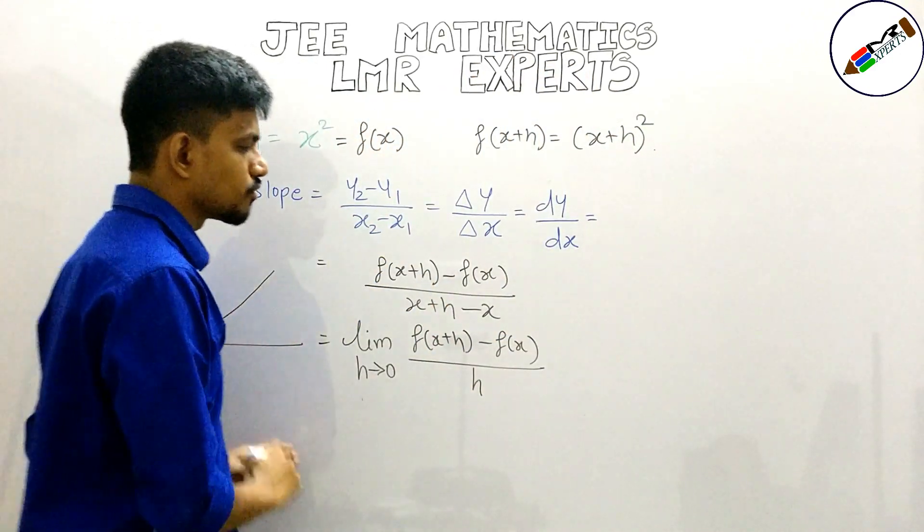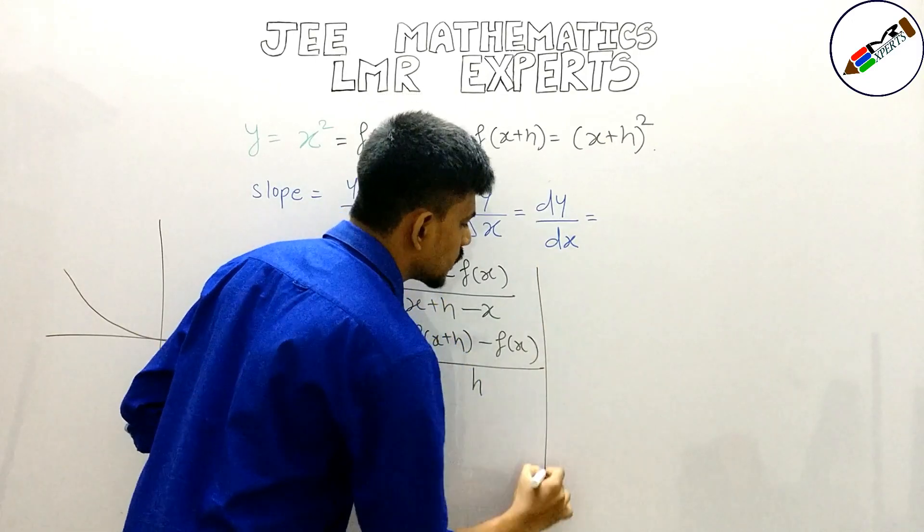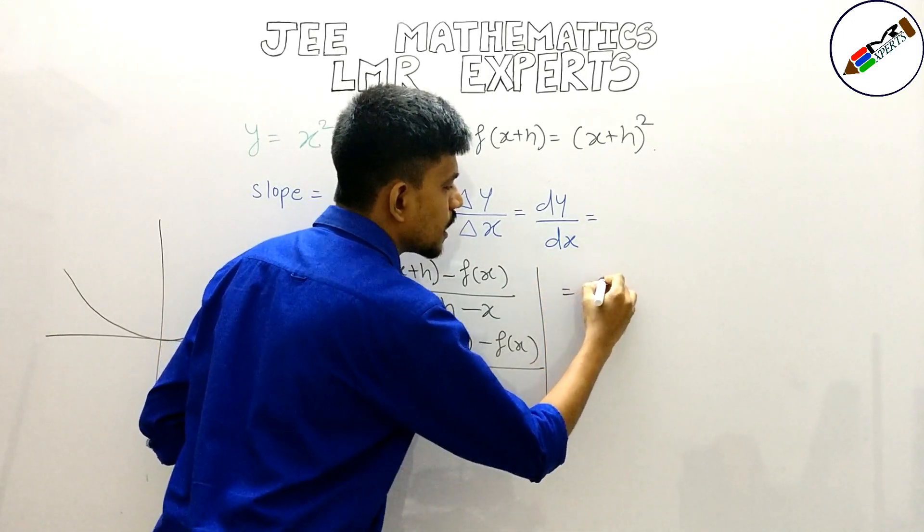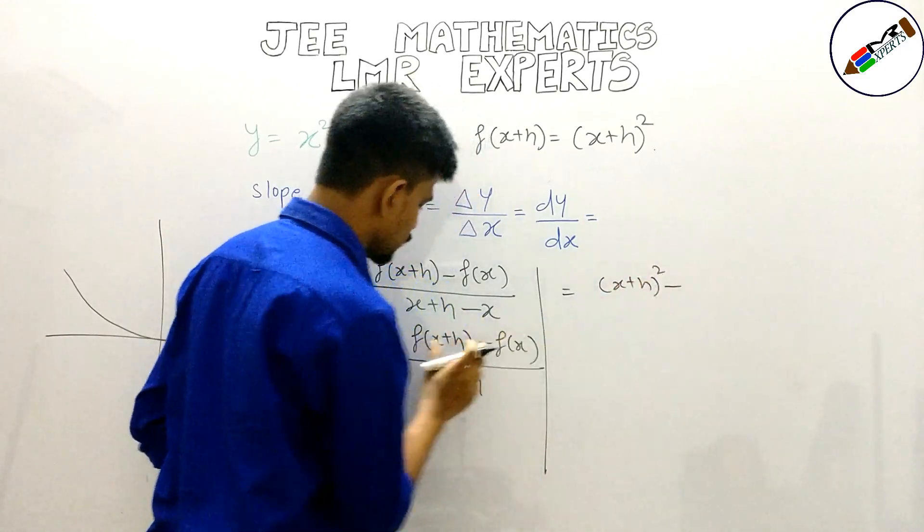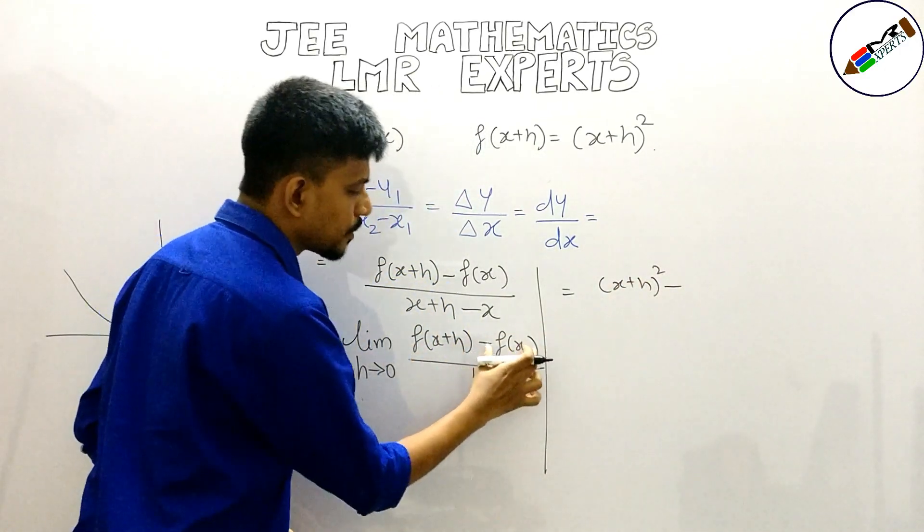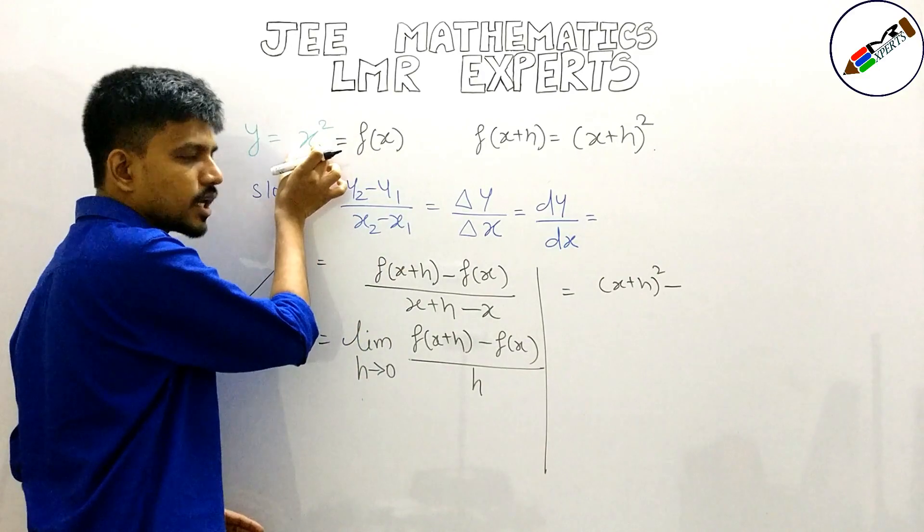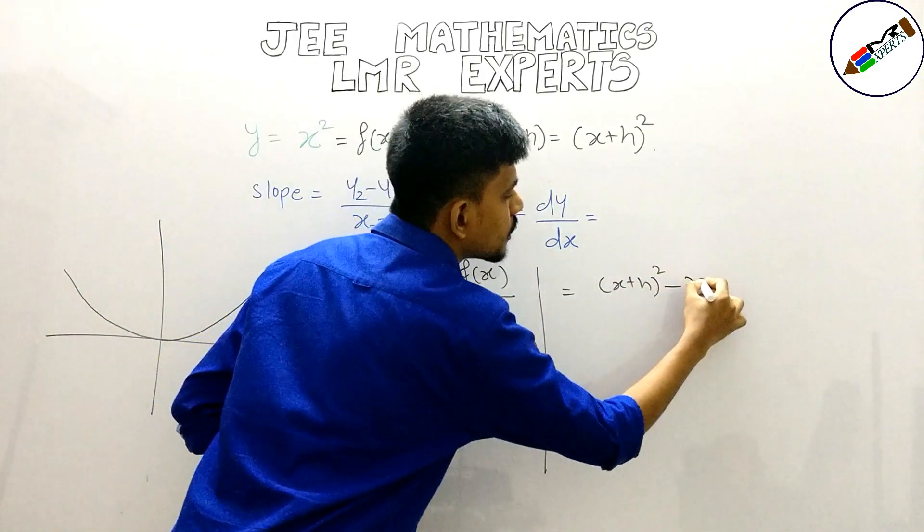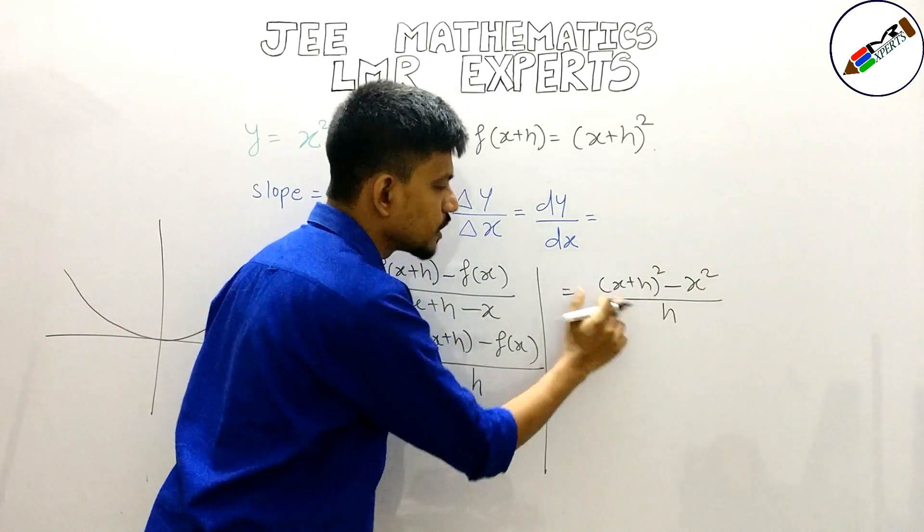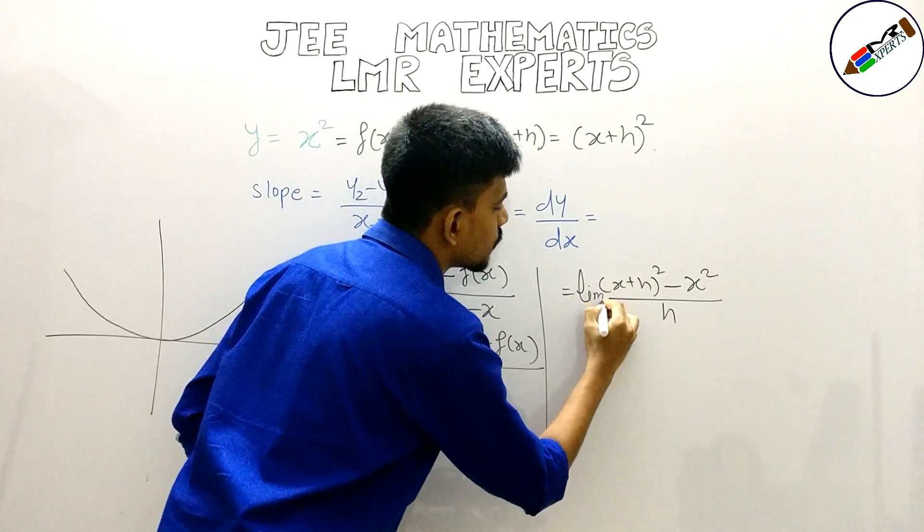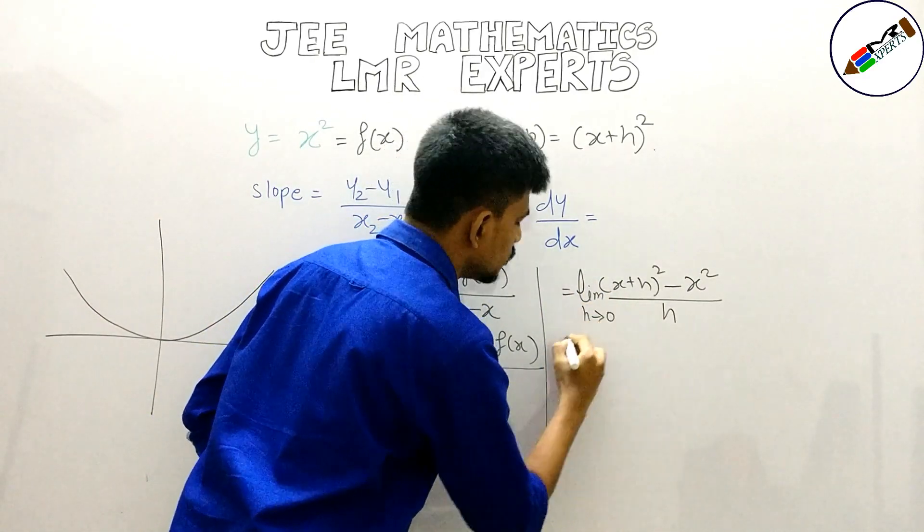Let me substitute these values over here. Here I can write down it as x plus h the whole square which is f of x plus h minus f(x) which is nothing but x square, upon h. But as h is very very small I will have to write down the limit which is h tends to 0.